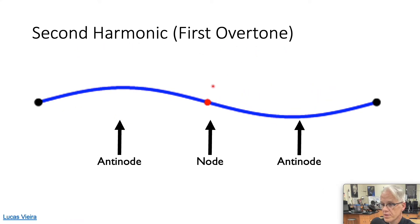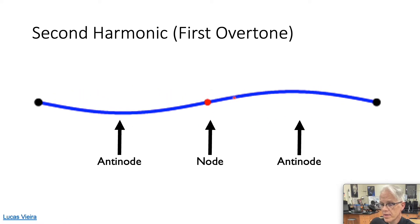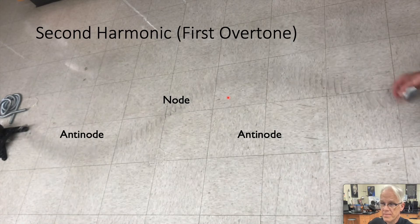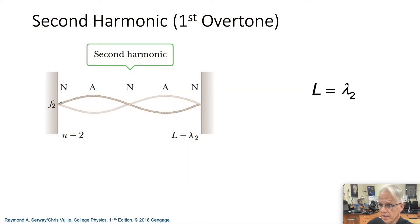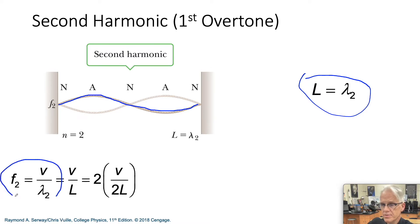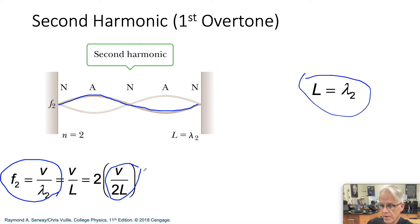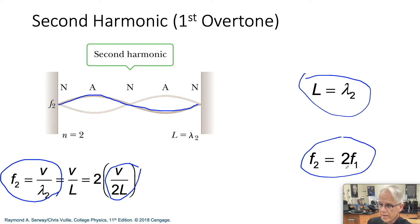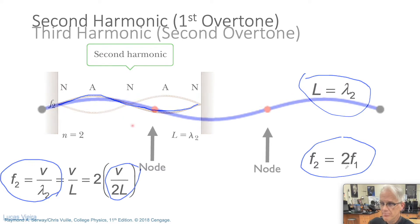Now let's look at the second harmonic, or first overtone. Now we have two antinodes and one node in the middle. For our second harmonic, notice how the length of the string is one wavelength. Plugging into the wave speed equation, we get v over l. Dividing to match the form of the first harmonic, we see that the second harmonic frequency is twice the frequency of our first harmonic.